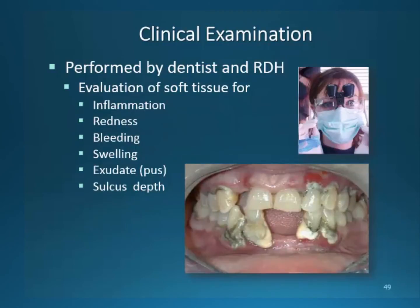During clinical examinations by dentists or hygienists, the evaluation of soft tissue will provide signs of the disease. Soft tissue can appear inflamed and red with bleeding and swelling exudate present. The sulcus depth changes to reflect the severity of the disease and determines its classification.